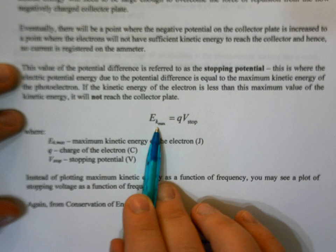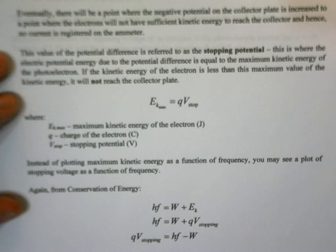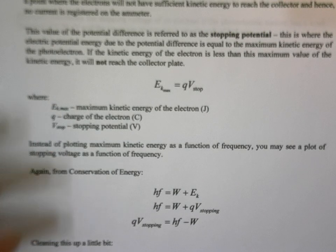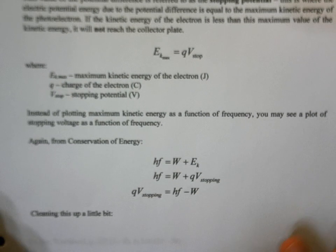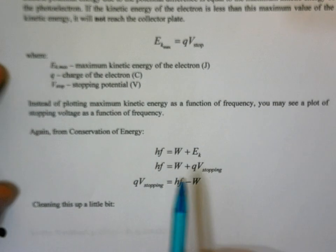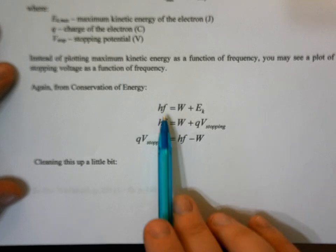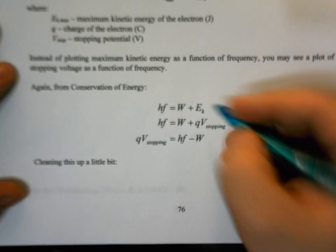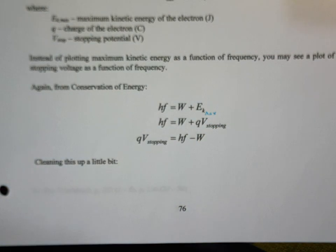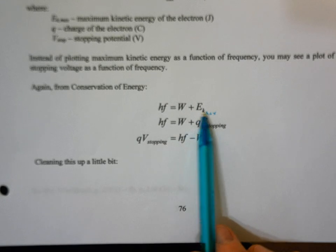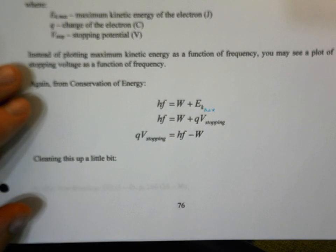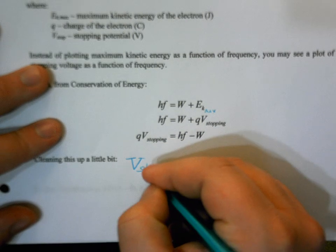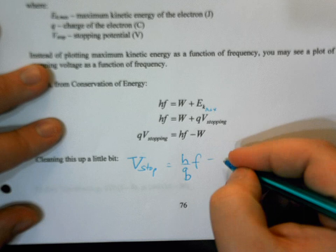We can relate the stopping potential to kinetic energy: the maximum kinetic energy of the electron equals the charge of the electron multiplied by the stopping potential (Ek_max = qV_stop). Energy must be in joules, q in coulombs, and stopping potential in volts. From conservation of energy, hf equals the work function plus qV_stop. Rearranging: qV_stop = hf − w, or equivalently, V_stop = (h/q)f − (w/q).